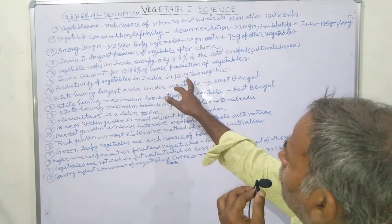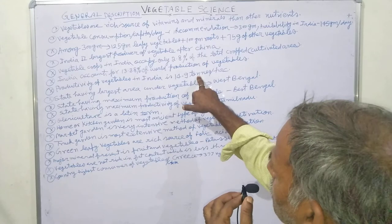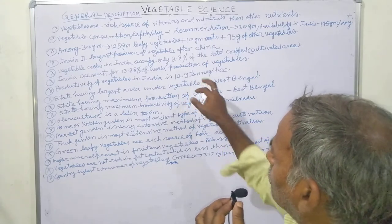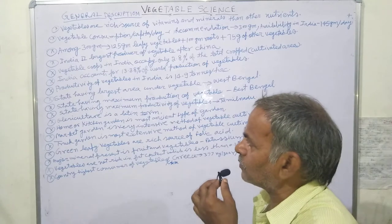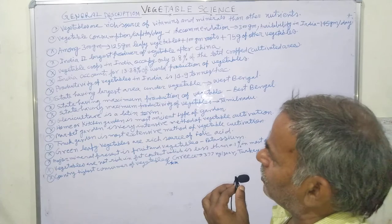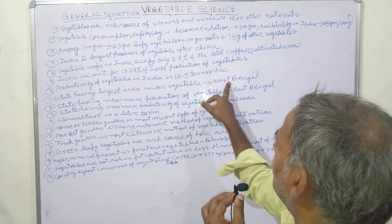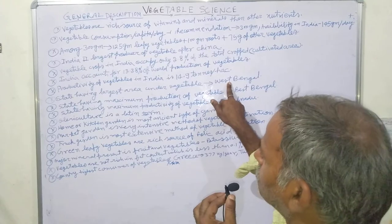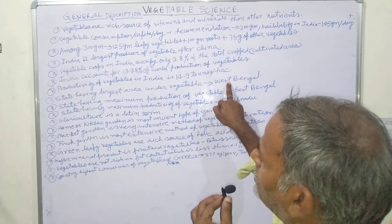In India, vegetable productivity is about 14.9 tons per hectare.